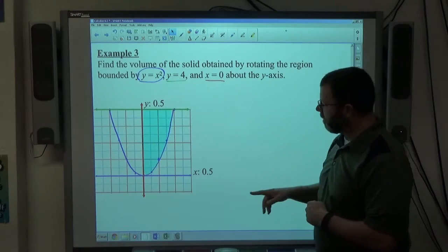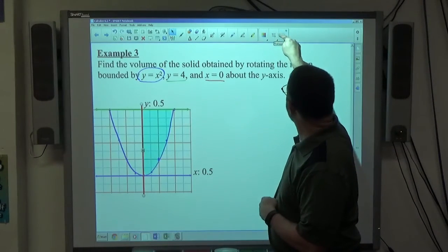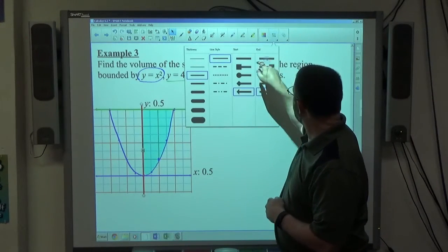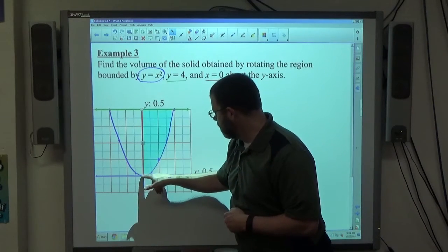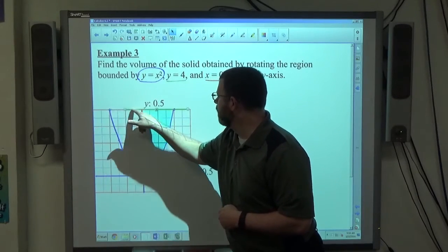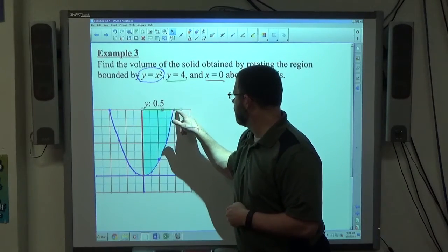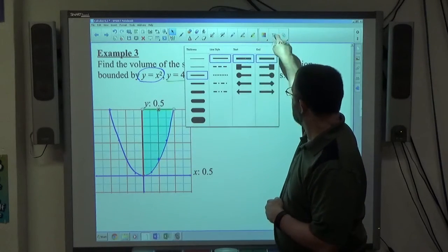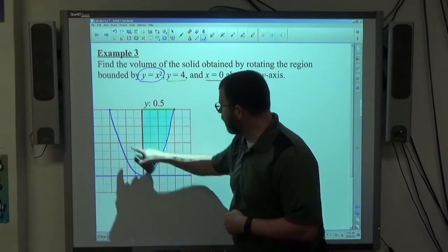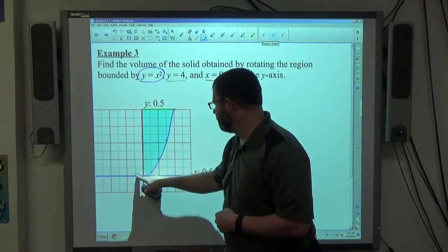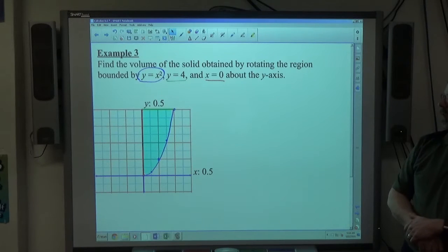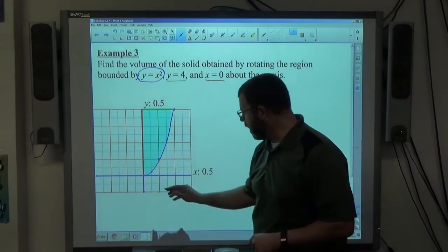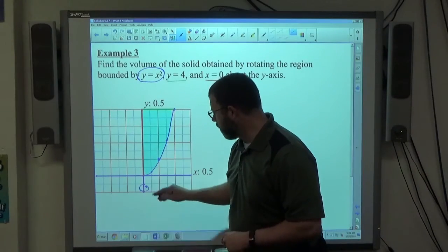So if I shrink out these lines here, just to really focus on our region that we're concerned with, it'll be right there. So there's y equals x squared, y equals 4, and x equals 0 creating that region. We're going to take that region and rotate it around the y-axis.